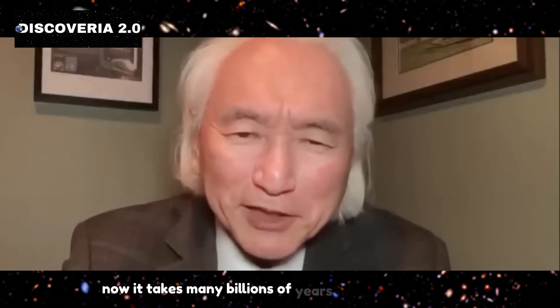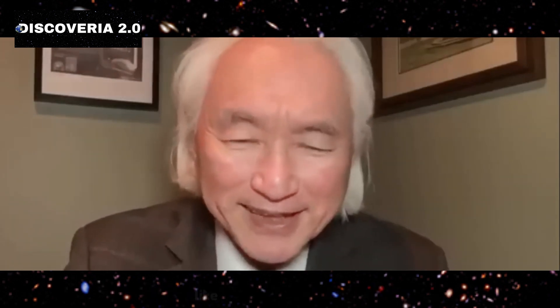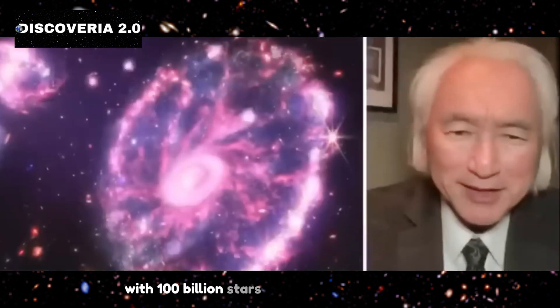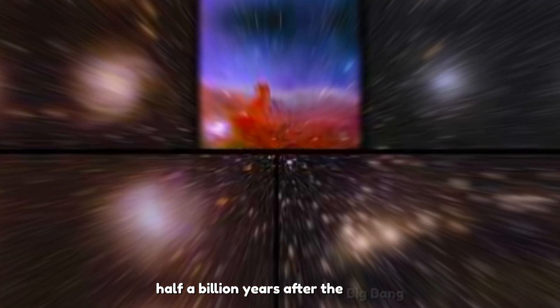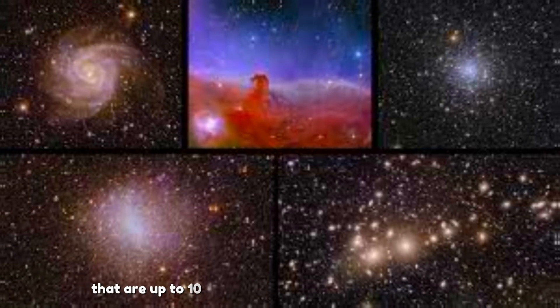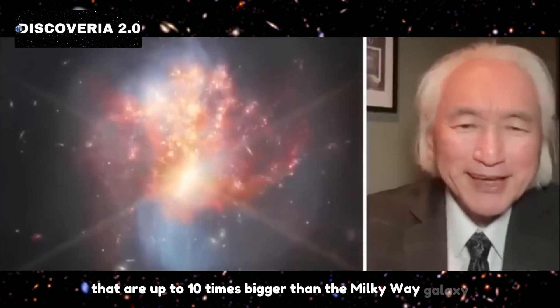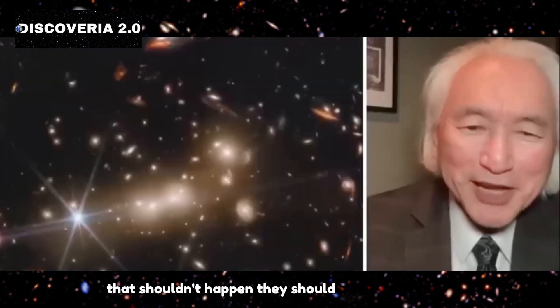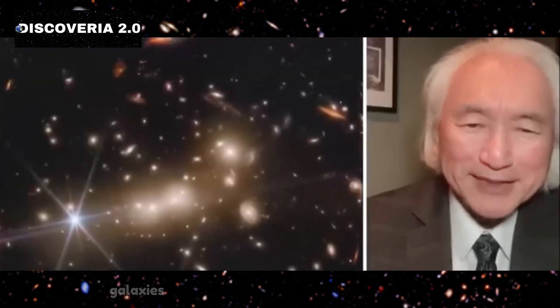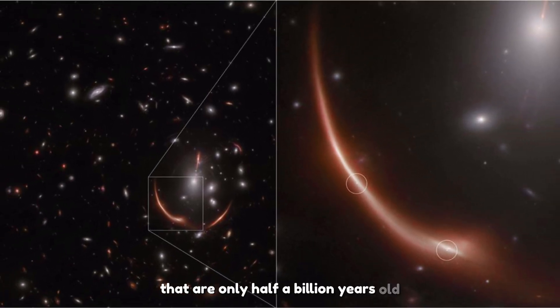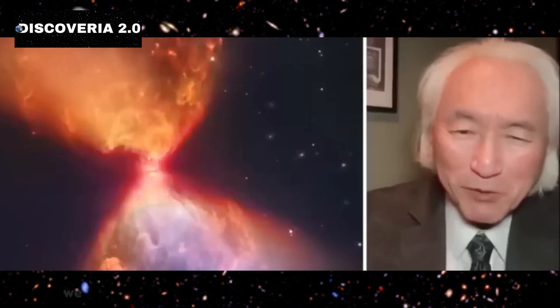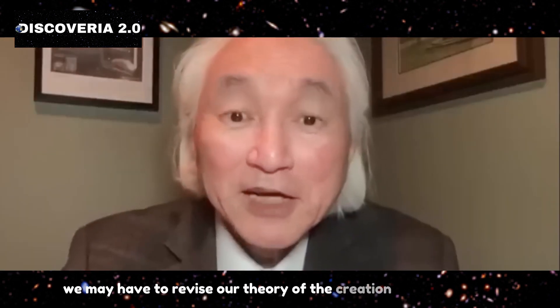Now, it takes many billions of years to create a galaxy like the Milky Way galaxy with 100 billion stars. But the James Webb Telescope has identified six galaxies that exist half a billion years after the Big Bang that are up to 10 times bigger than the Milky Way galaxy. That shouldn't happen. There should not be primordial galaxies that are bigger than the Milky Way galaxy that are only half a billion years old. Something is wrong. We may have to revise our theory of the creation of the universe.